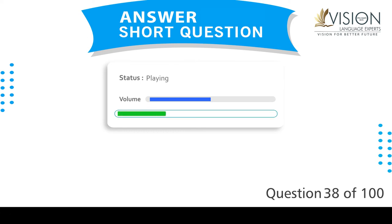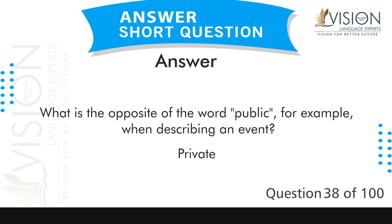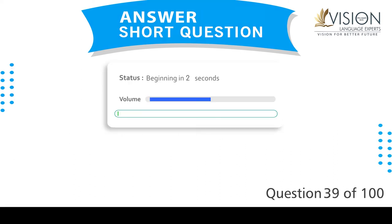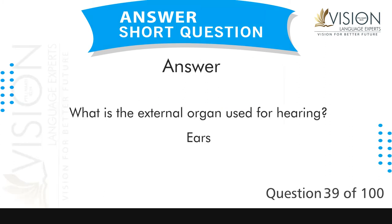What is the opposite of the word public, for example when describing an event? Private. What is the external organ used for hearing? Ears.